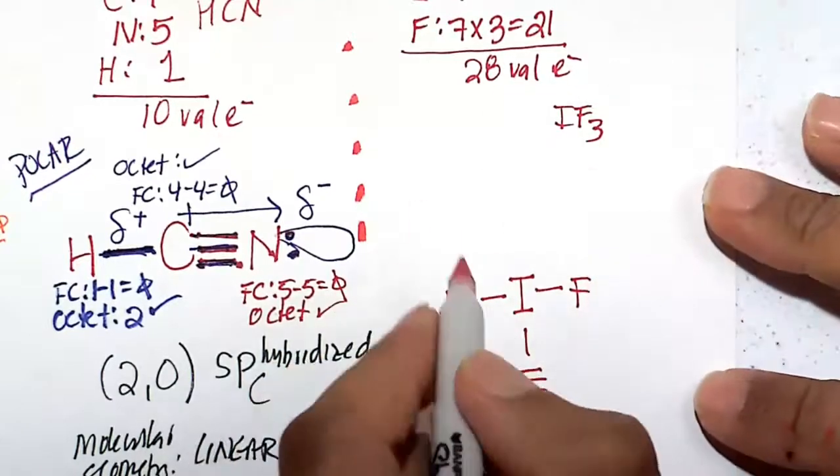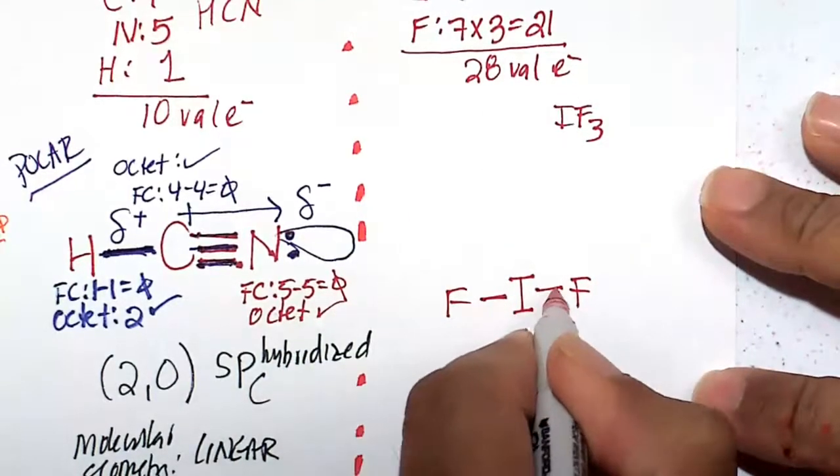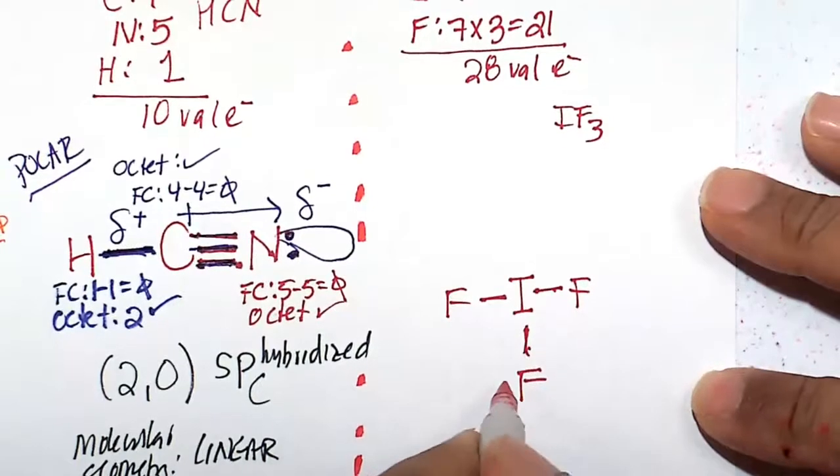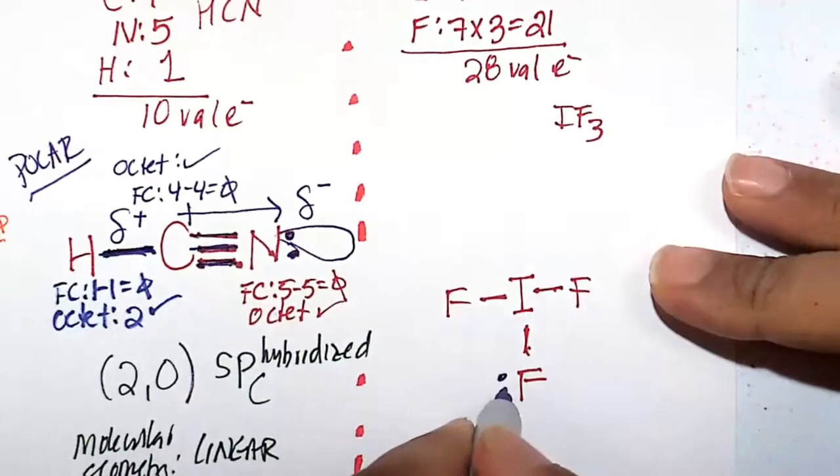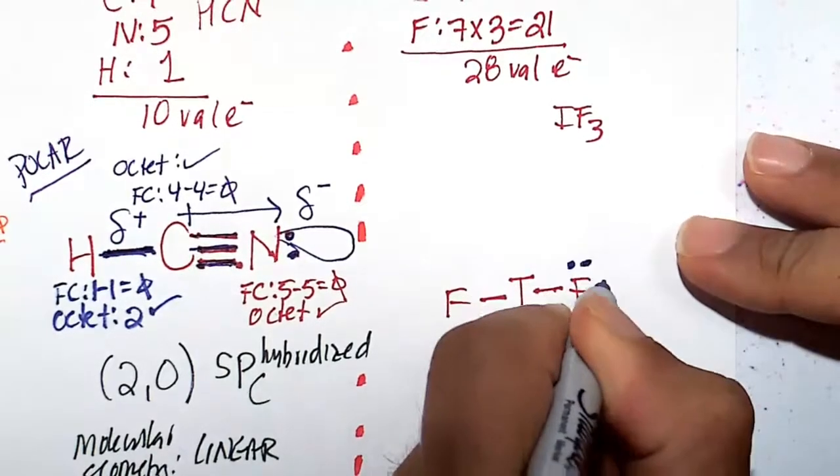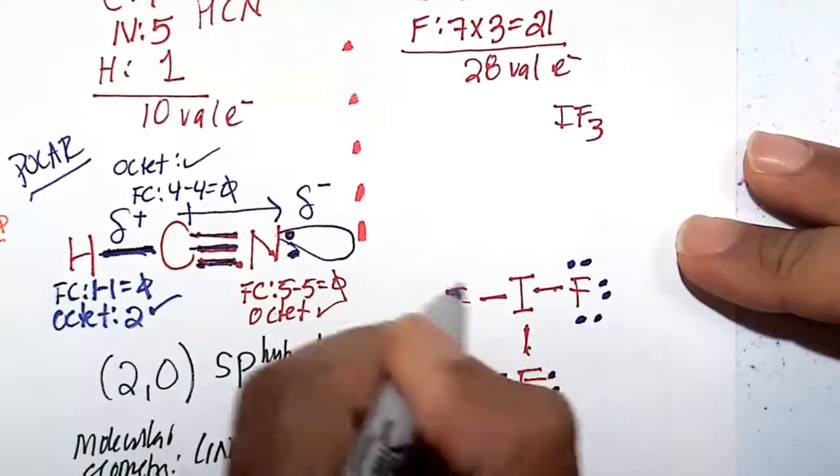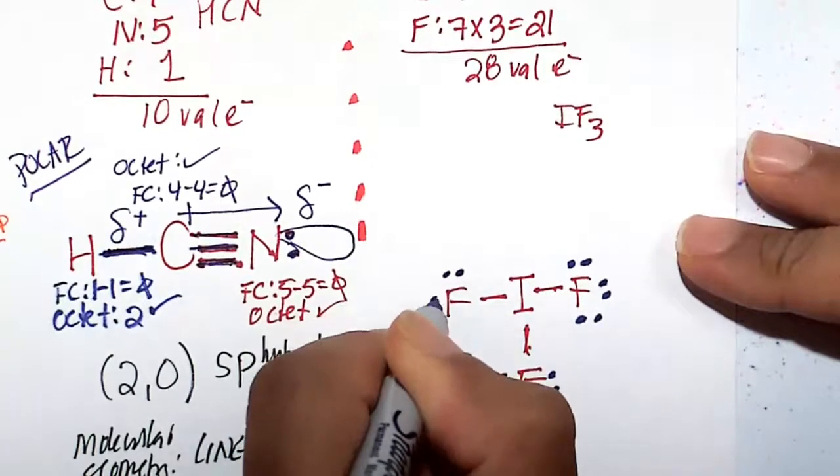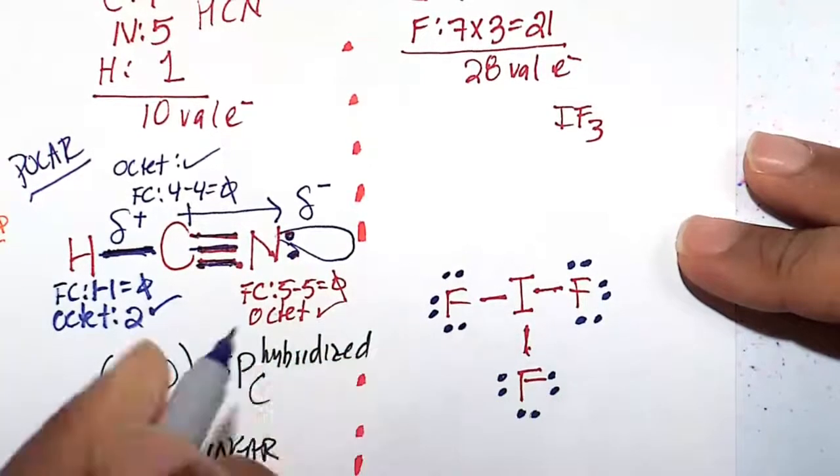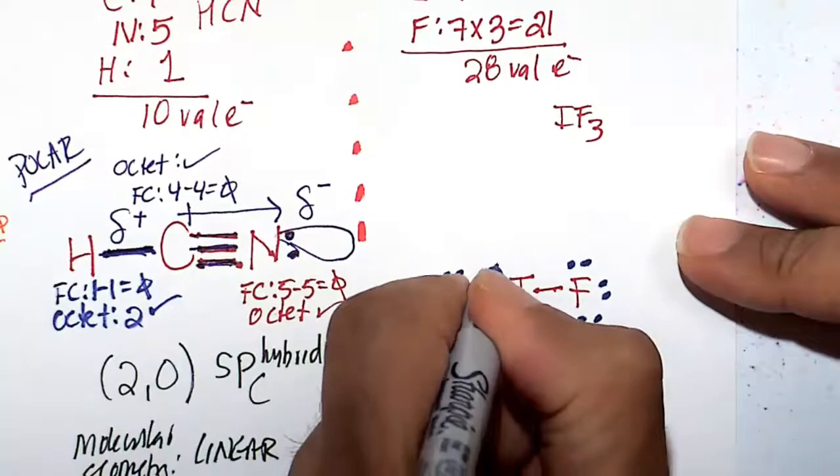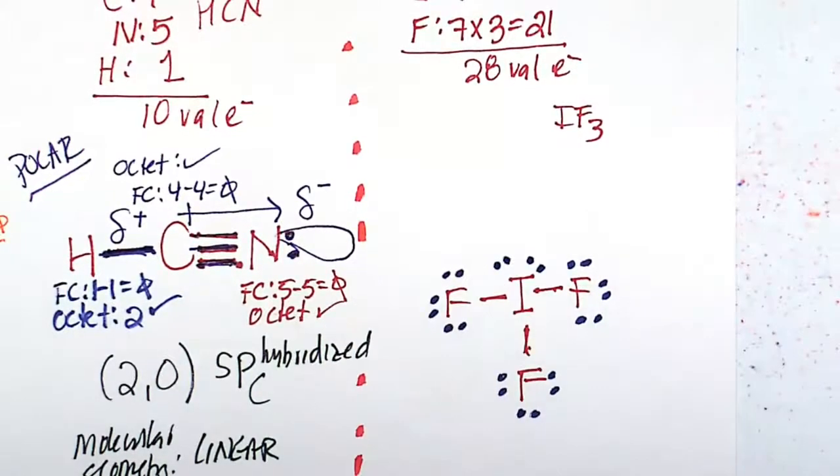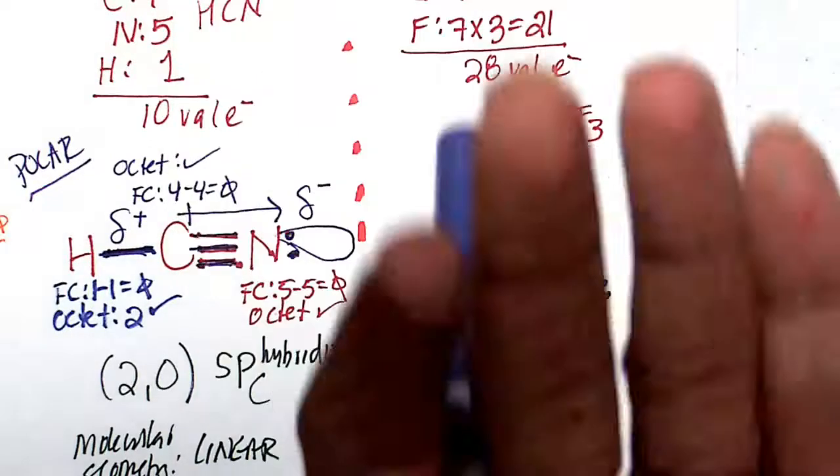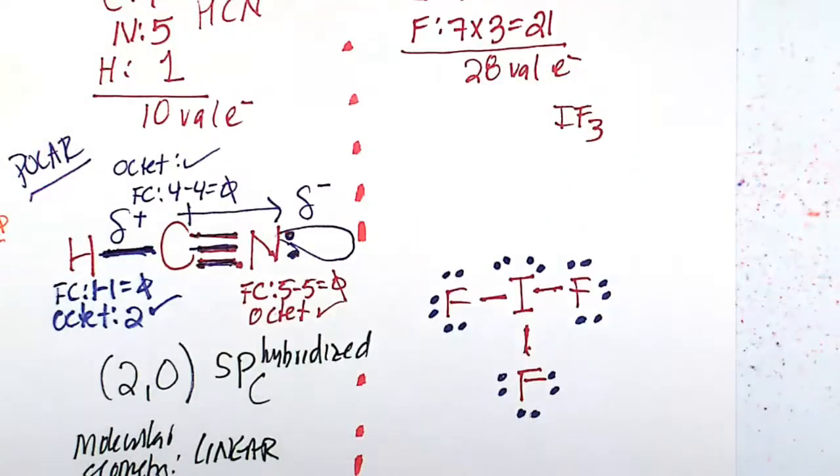Now we've got to get our 28 electrons here. Counting from 1 through 28, placing electrons around each atom. Let's put those two lone pairs, a total of 4 electrons, back on the central iodine atom.